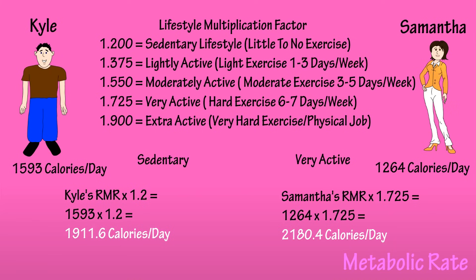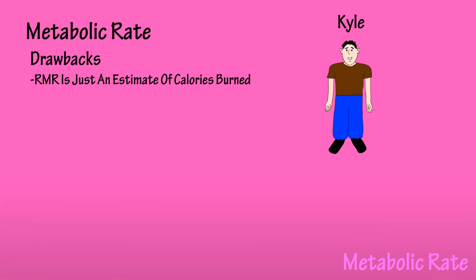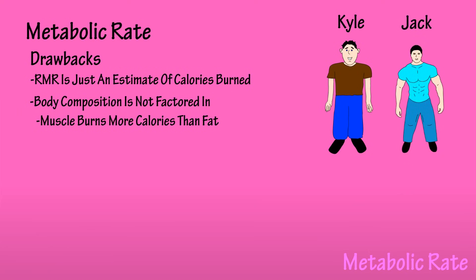Now you can use the RMR equation and lifestyle multiplication factor to calculate your baseline. A few things I need to mention. First, this and any other formula used to calculate your metabolic rate is just an estimate — there is a margin for error. Second, muscle mass is very important. Let's look at Kyle and Jack, who both weigh the same. However, Jack has much more muscle mass than Kyle. Since muscle burns more calories than fat, Jack will have a higher metabolic rate. The formula does not account for this situation.